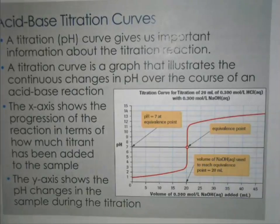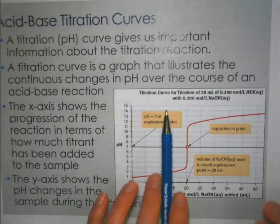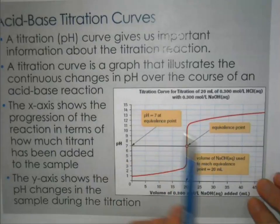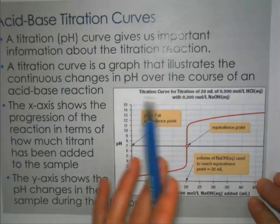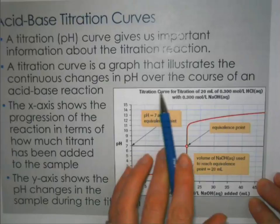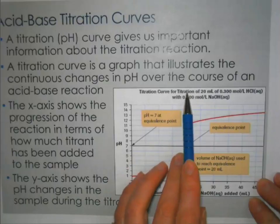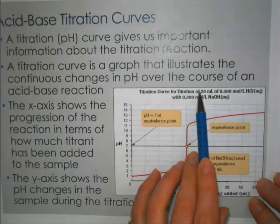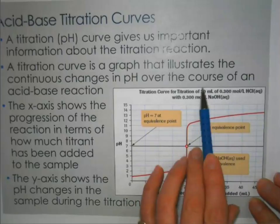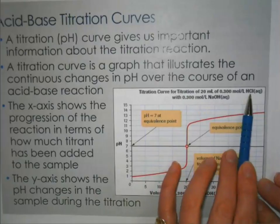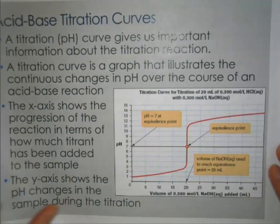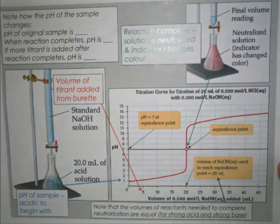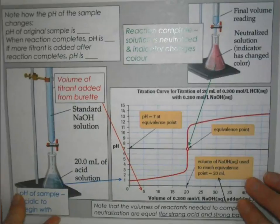Our curve shows how the pH is changing over time. The last thing to remember is that you always have to have a title for your graph. The title is usually going to be something like 'Titration of hydrochloric acid with sodium hydroxide.' Make sure your graph always has a title if you want full marks on written questions on the test.